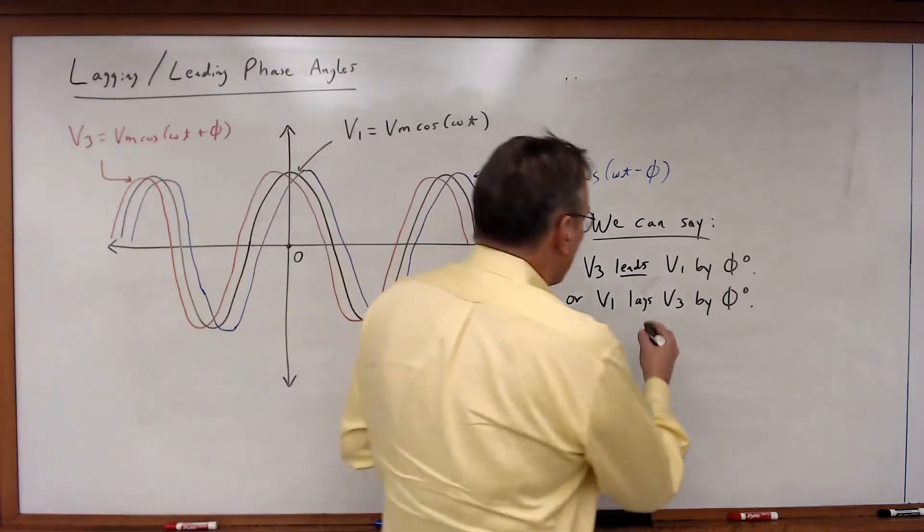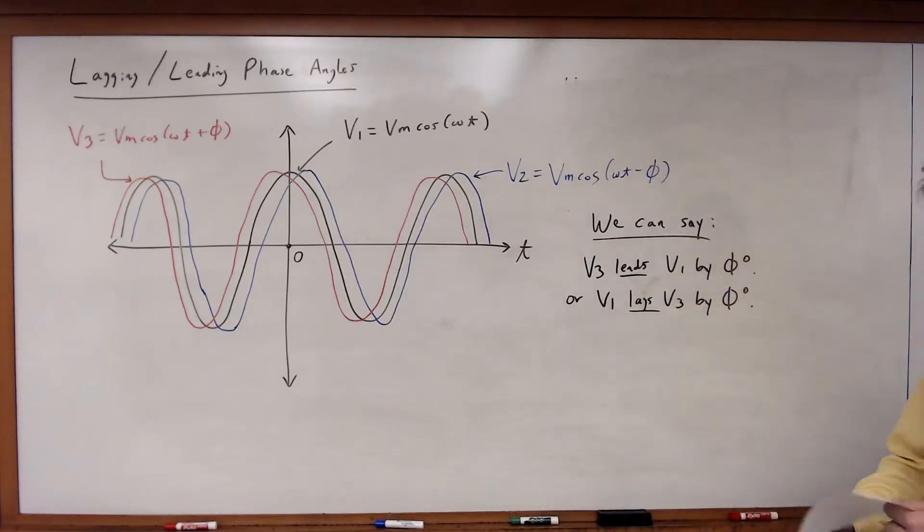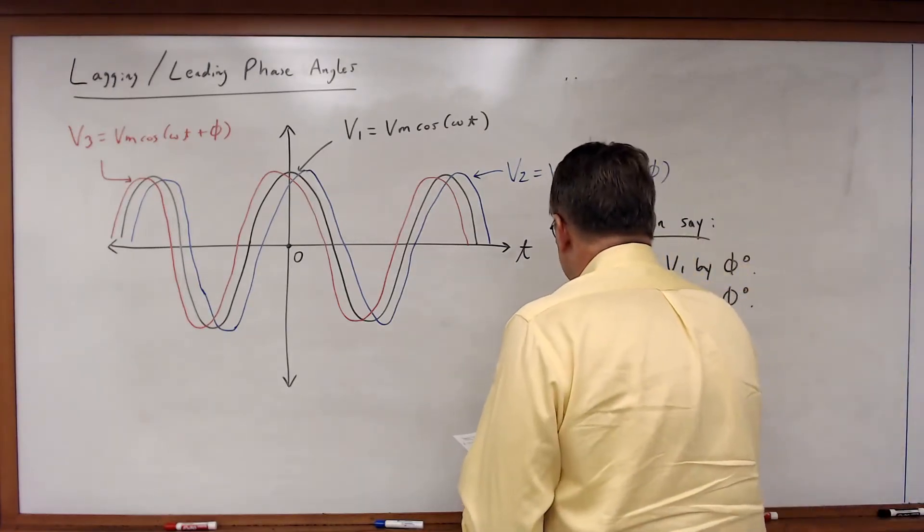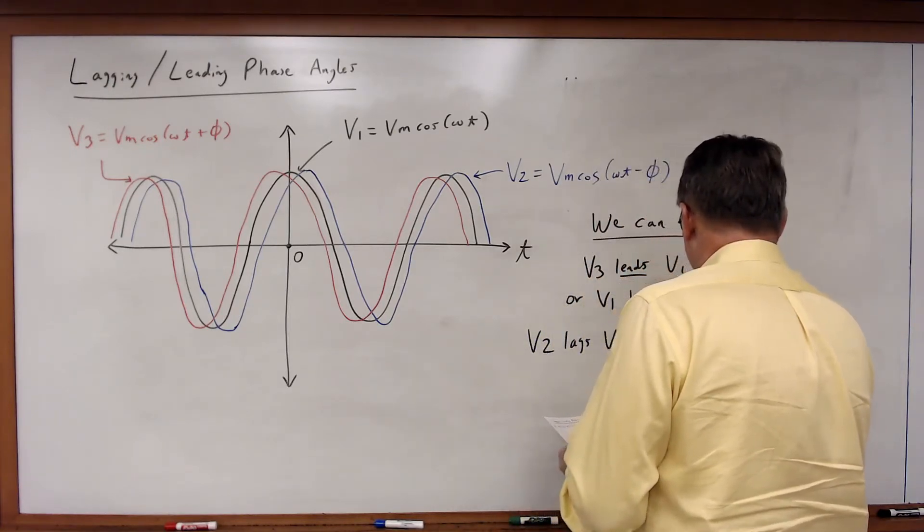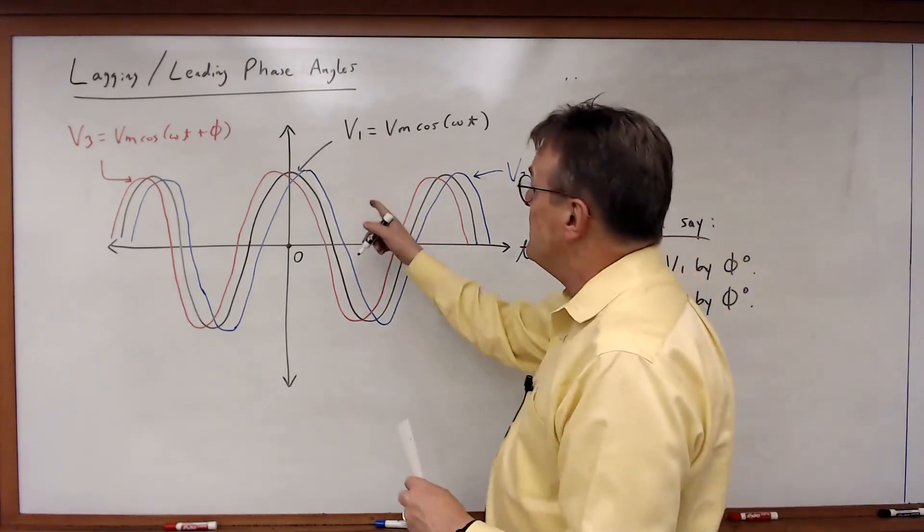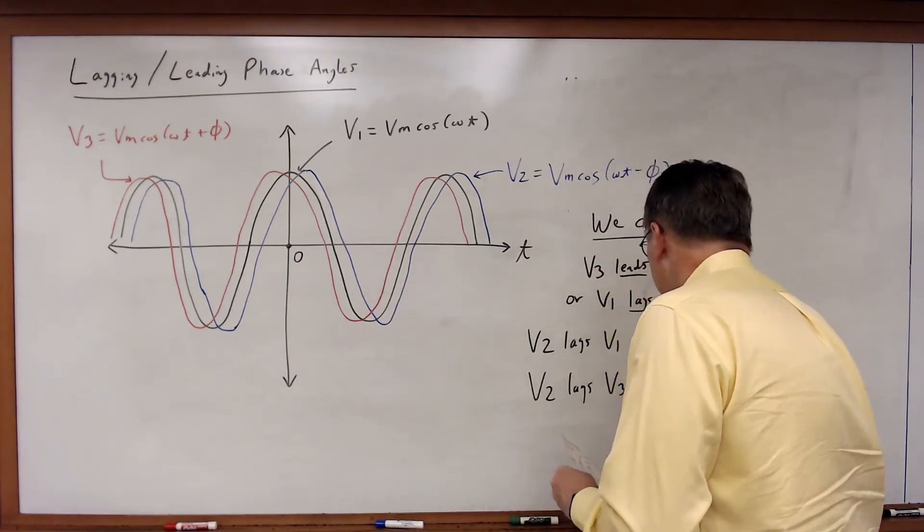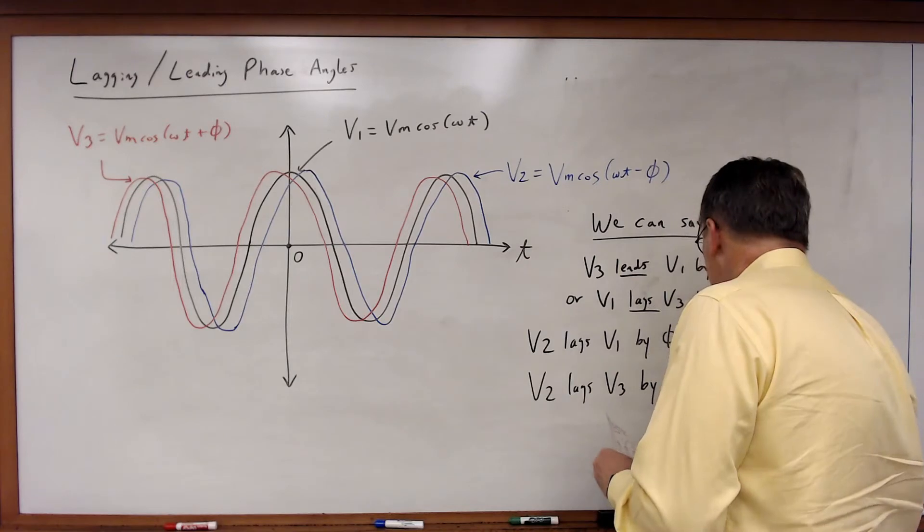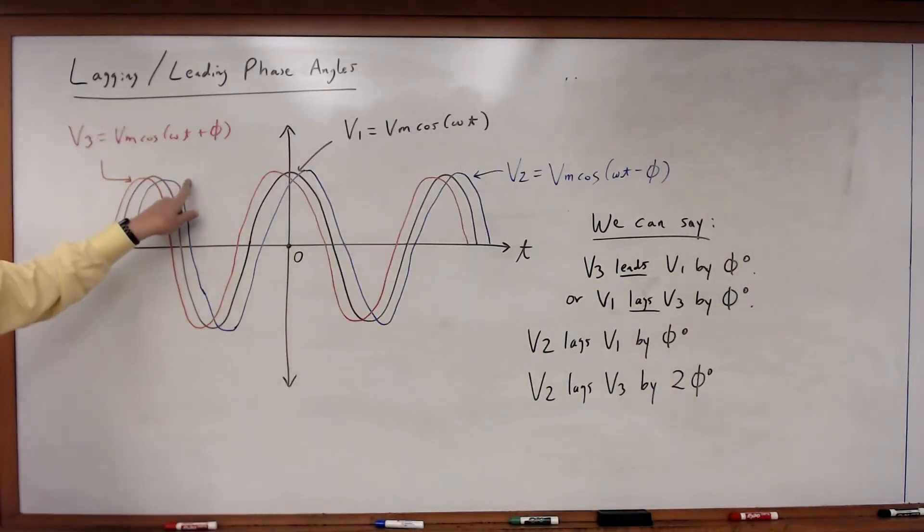In other words, v1 reaches the peak value after v3, it's behind it, it's lagging. So notice it's all a matter of which waveform we look at in relationship to the other. We can also say that v2 lags v1 by φ degrees, and we can also say that v2 lags v3 by 2φ degrees. So in other words v2 in blue also lags v3, only it's twice the phase angle.